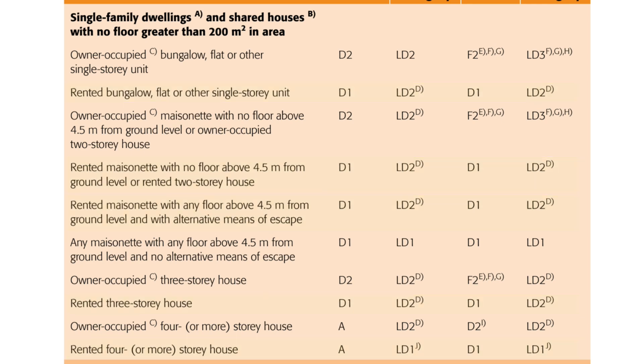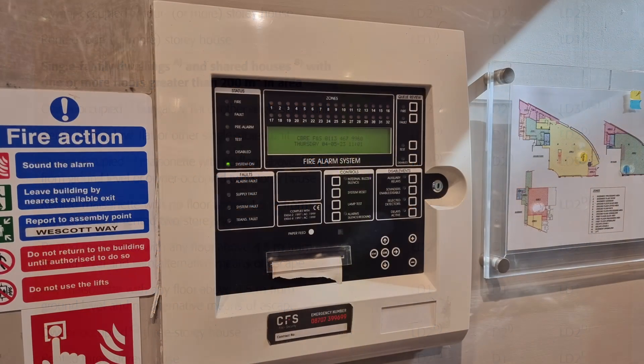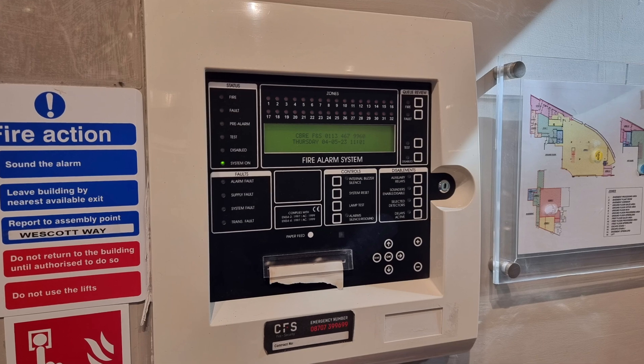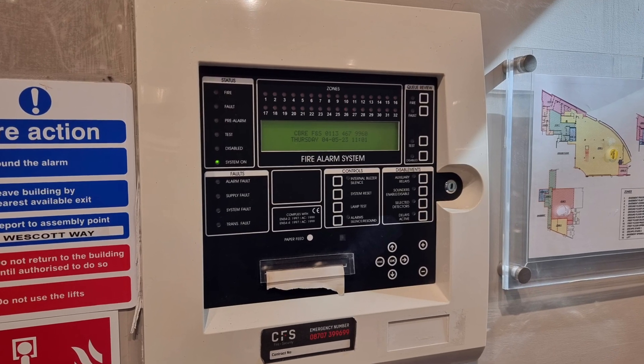Another interesting upgrade applies to four-storey properties, or any of those massive houses with a storey area bigger than 200 square metres that has more than one floor. These properties must have a Grade A system, which is the full central control and indicating equipment with separate sounders-type system. Hopefully all those grand designers take that into account in their costings.